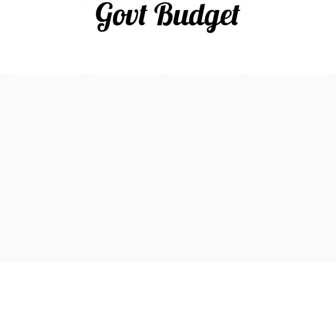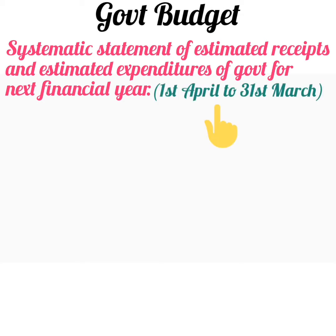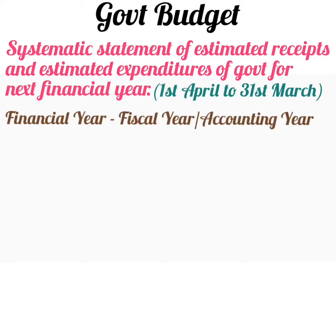What is government budget? Government budget is a systematic statement of estimated receipts and estimated expenditures of the government for the next financial year. Financial year refers to the year which starts from the first day of April and ends on the last day of March. It is also known as fiscal year or accounting year. Every government aims at maximizing economic development as well as social welfare of the country with its limited resources. Hence, the government has to make a proper plan of receipts and expenditures of the next accounting year.